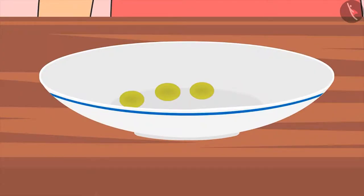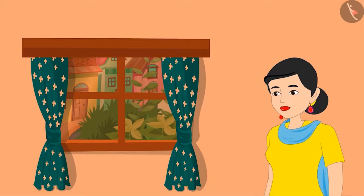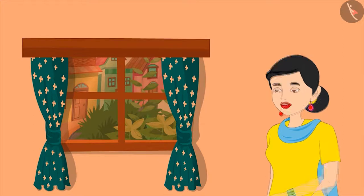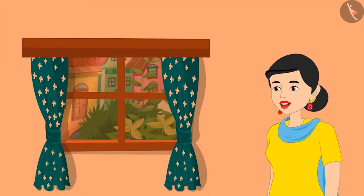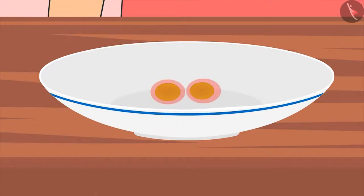'If I ate one out of four grapes, then now there are one, two, and three — that means three grapes.' Chotu eats one more: 'Let me eat one out of the three grapes. Now tell me, how many grapes are left out of three?'